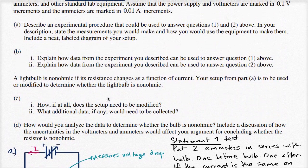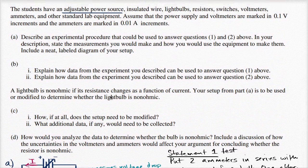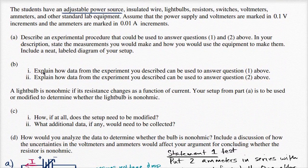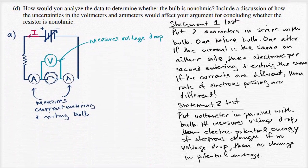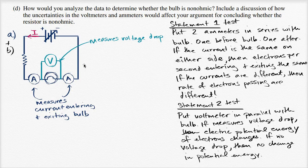Actually, I think I also answered part B here — explaining how data from the experiment answers questions one and two. So this covers parts A and B. If you're taking the test and have time, you'd want to label the diagram more thoroughly, but if you're running short on time, this level of detail should suffice.